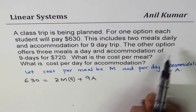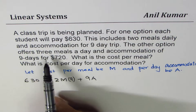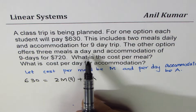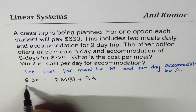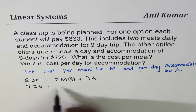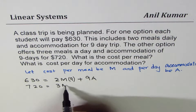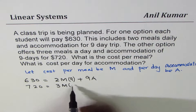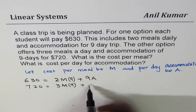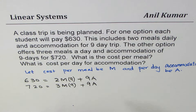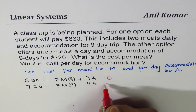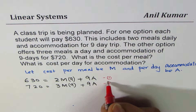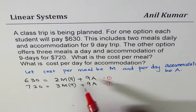The second equation is simpler. The other option has three meals a day and accommodation for nine days for $720. So it is: 720 = 3m × 9 + 9a. We now have two equations from the given conditions, and we can use elimination because the 9a terms will cancel out.